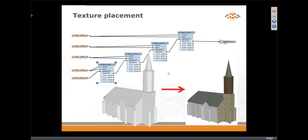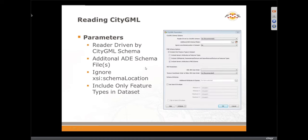In terms of reading, I'll review a couple of points on the reader. We typically recommend that the reader be driven by the CityGML schema. If you are using an ADE, make sure you specify it in the top right. Often ignoring the external schema location will help if you're having any trouble reading a dataset. Unless you want a lot of extra feature types, it's best to include only those in the dataset — one feature type per CityGML class.